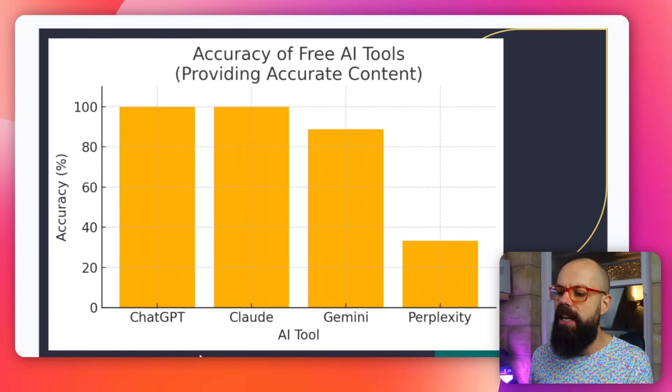Perplexity was the worst. It was the easiest to convince that there was stuff in the paper that wasn't there, and it also just didn't always get the right information out of the paper. So if you want a free LLM for extracting information from a single PDF, I would use ChatGPT or Claude.